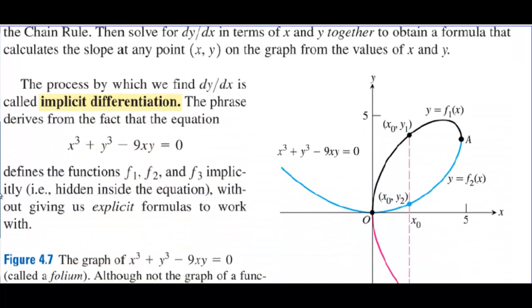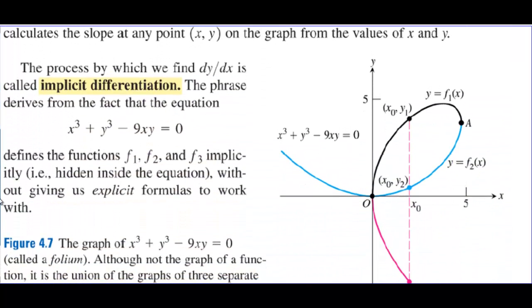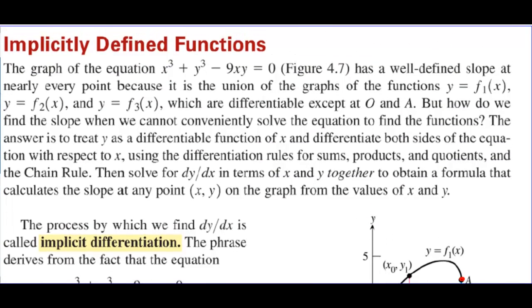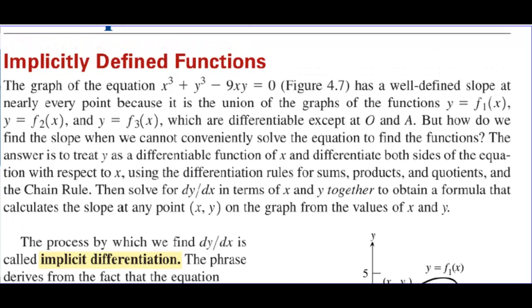Let's look at O and A. Here's a graph of the function, and at O and at A there's not a derivative — there's no slope of the tangent line. But how do we find the slope when we cannot conveniently solve the equation to find the functions? The answer is to treat y as a differentiable function of x and differentiate both sides of the equation with respect to x, using the differentiation rules for sums, products, and quotients and the chain rule.